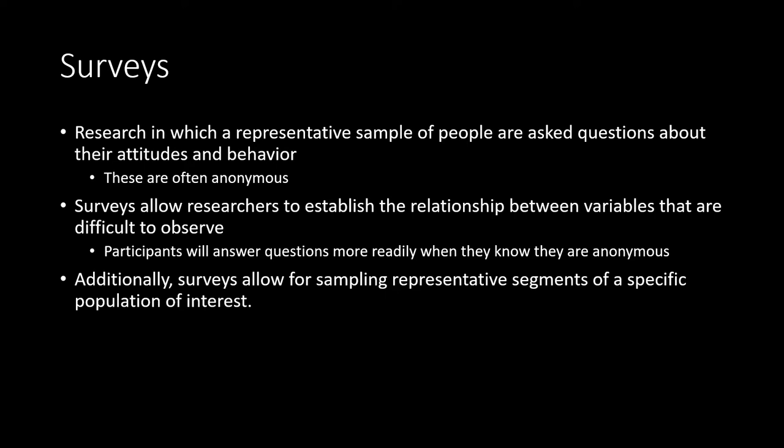One of the primary ways in which data is acquired for the correlational method is through the use of surveys. While many are probably familiar with what surveys are, surveys refer to research in which some representative sample is asked questions about their attitudes and behaviors. One of the advantages is that most surveys allow for responses to be anonymous, which allows participants to answer questions they would not often answer if it was known who they were. Surveys allow researchers to establish the relationship between variables that are oftentimes difficult to observe, partly because of this anonymous nature.